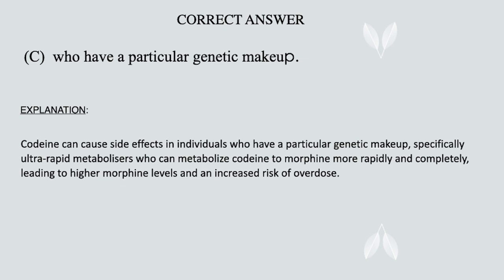Specifically, ultra rapid metabolizers can metabolize codeine to morphine more rapidly and completely, leading to higher morphine levels and an increased risk of overdose. On the other hand, poor metabolizers may have reduced morphine levels and may not get adequate pain relief from codeine.